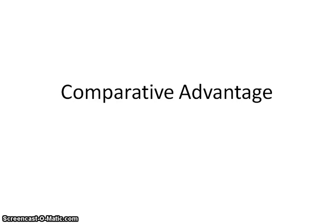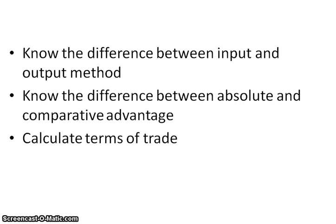This screencast is on comparative advantage, found in Module 4 of your textbook. We're looking at the opportunity costs involved with each country in the production of certain goods. Whoever has the least opportunity cost has a comparative advantage. You need to know the difference between the input and output method, how to figure out absolute versus comparative advantage, and how to calculate the terms of trade.